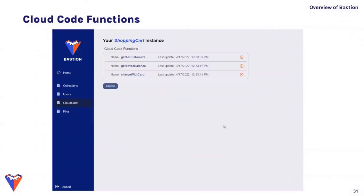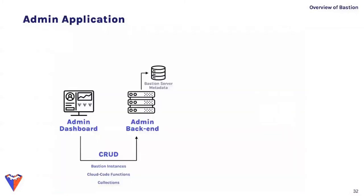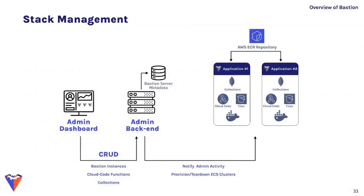Uploading a zip file causes the admin app to create a new AWS Lambda function, which can be invoked using the SDK. These functions can provide additional functionality such as communicating with third-party APIs or filtering and transforming application data. There is also a files tab for viewing uploaded files associated with each Bastion backend. The admin application consists of a front-end dashboard and a backend handling CRUD actions, storing data about existing Bastion backends.